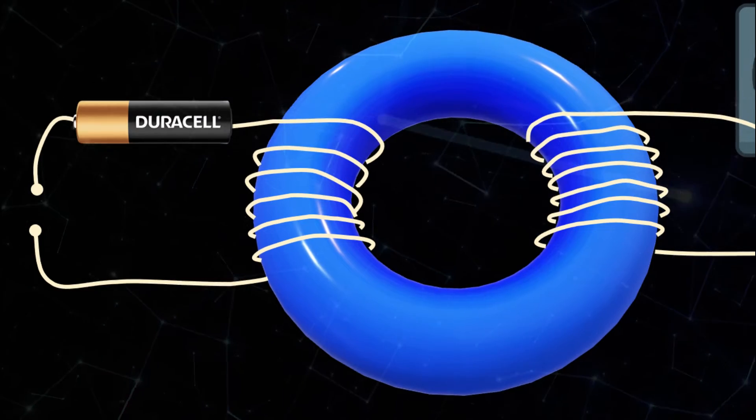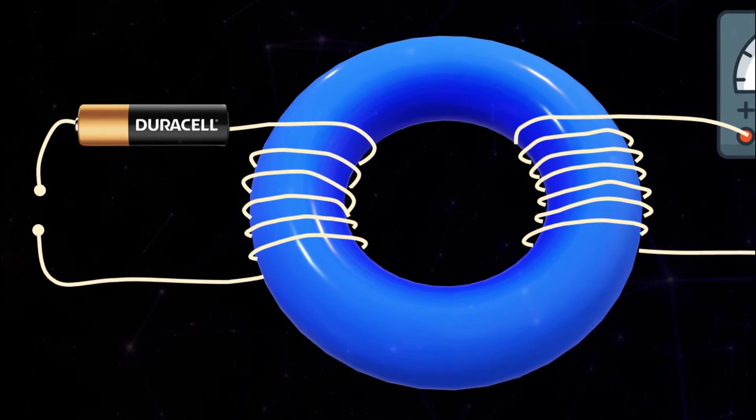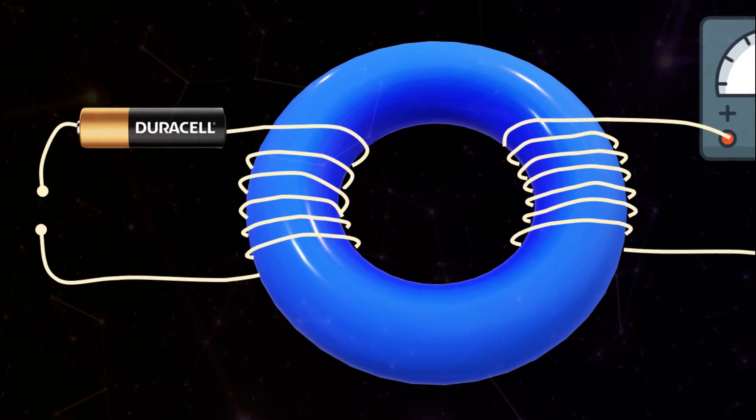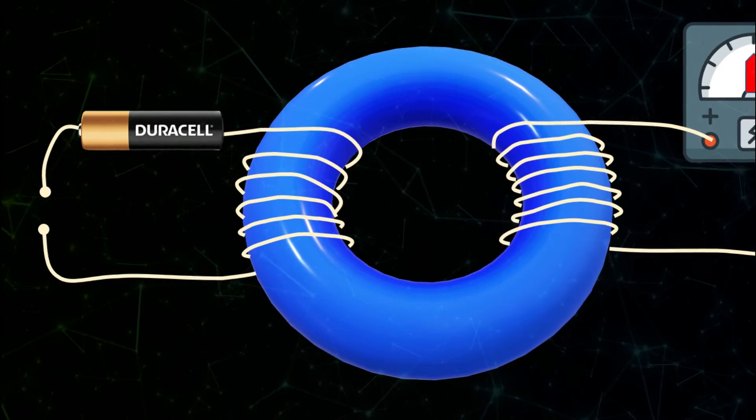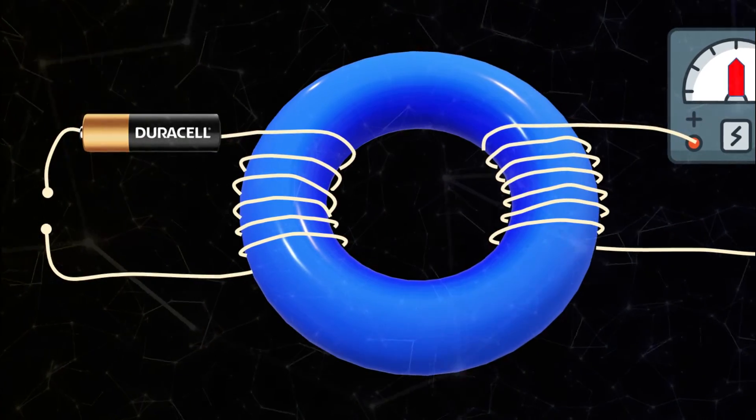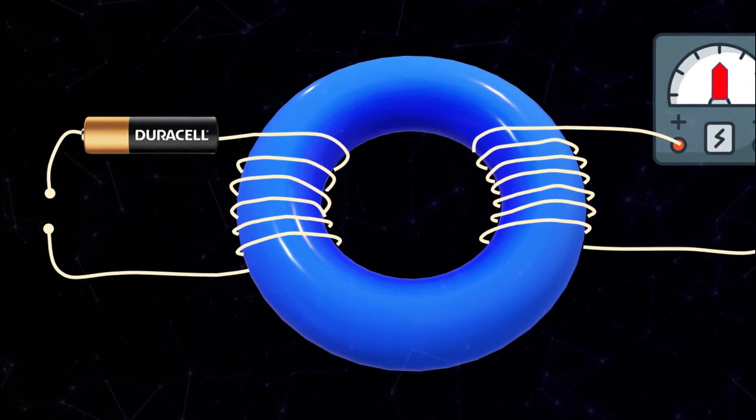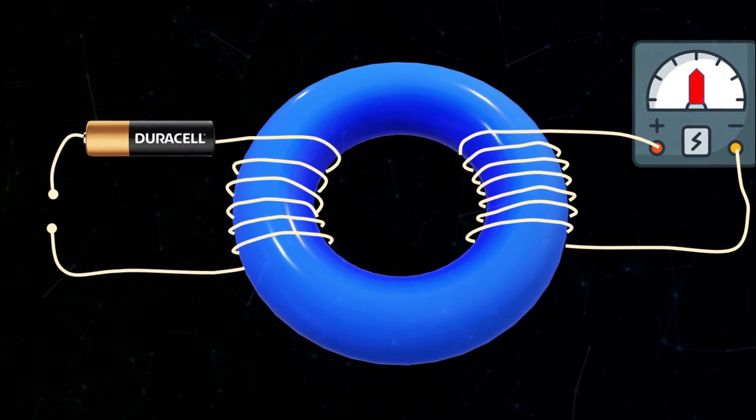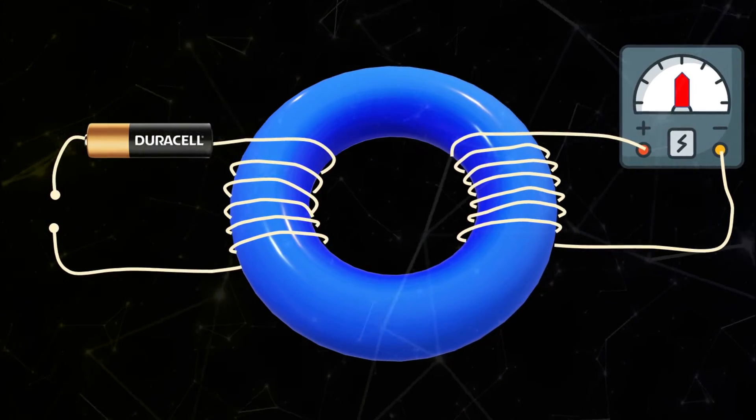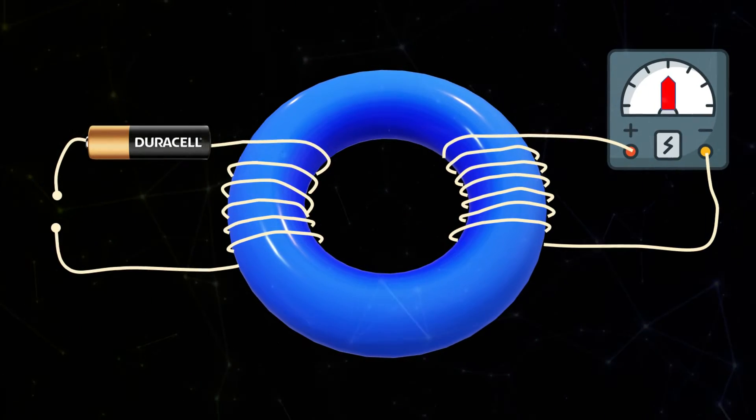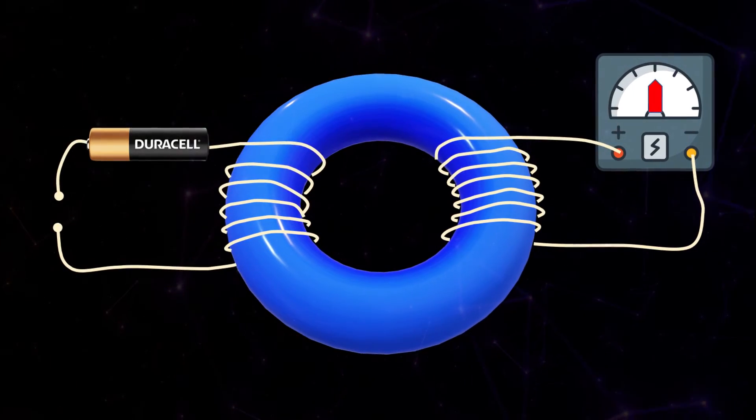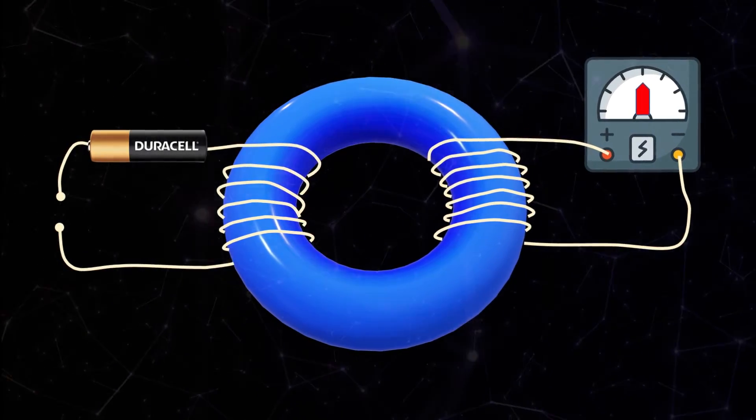In 1831 Michael Faraday finally succeeded in demonstrating electromagnetic induction, the generation of electricity from magnetism. His apparatus consisted of a ring of iron wound around on opposite sides by two coils of wire. The coil on the left was connected to a battery while the coil on the right to a galvanometer which measures the flow of a current.